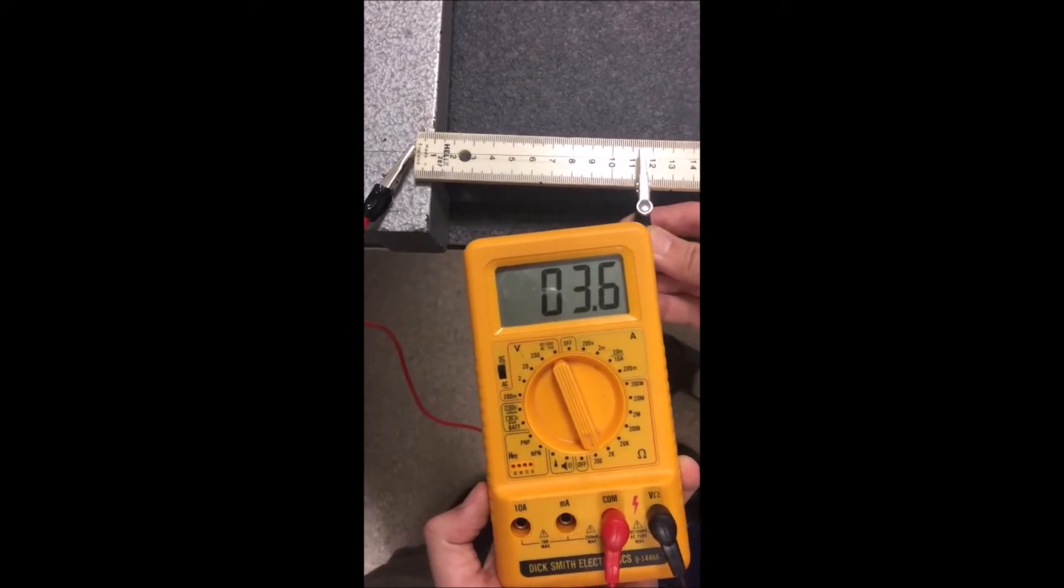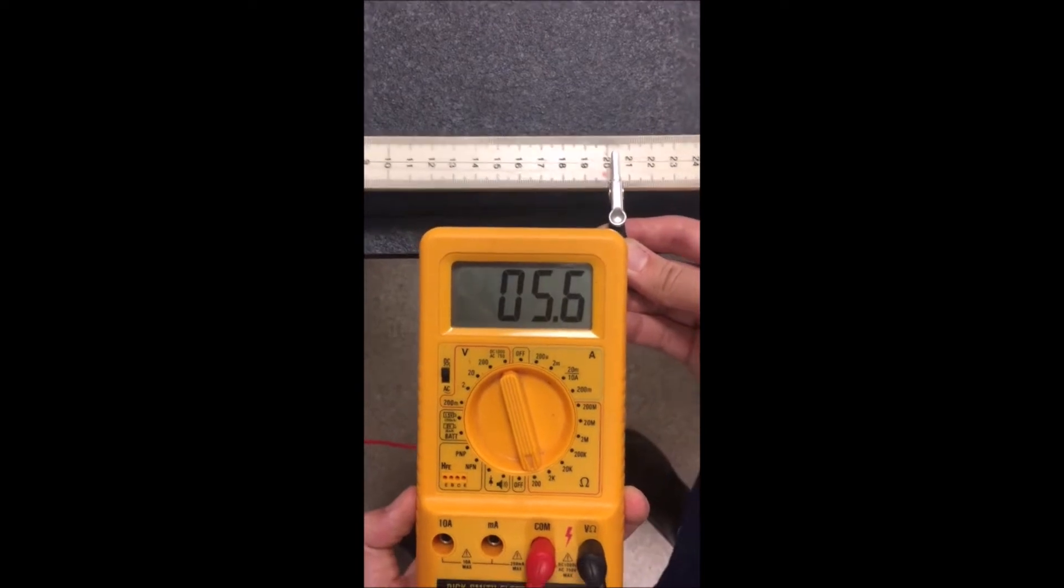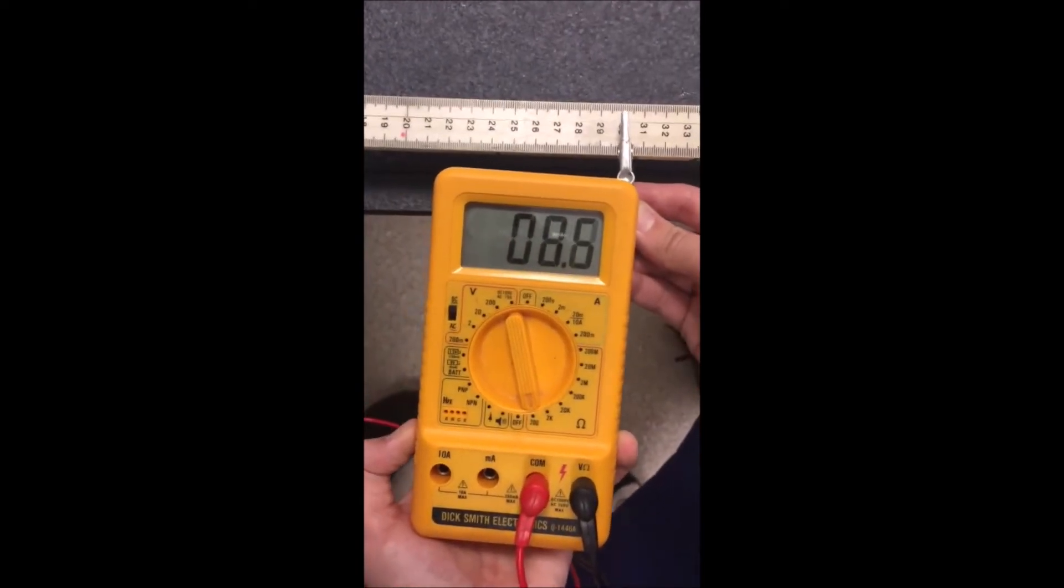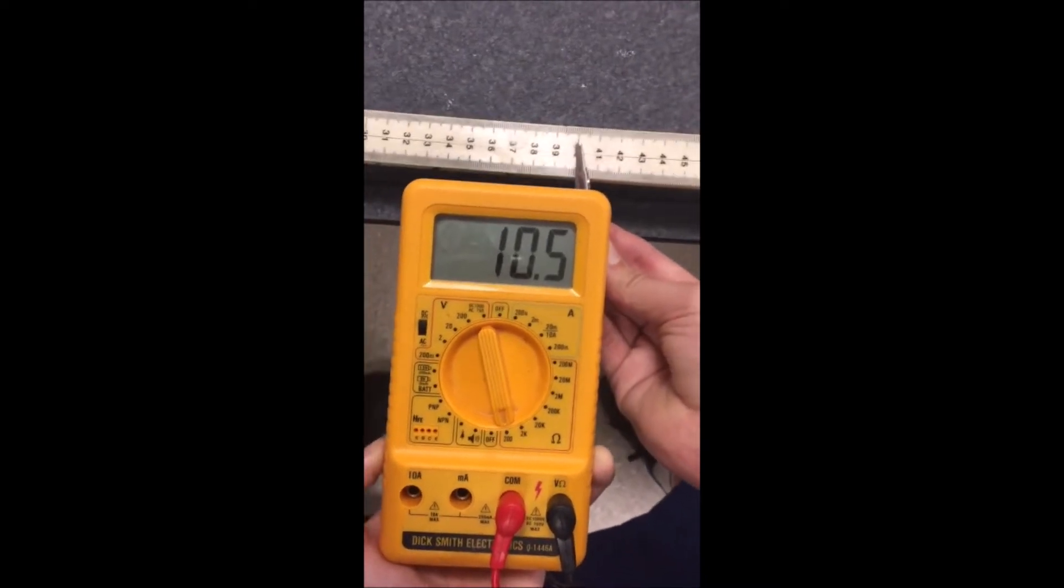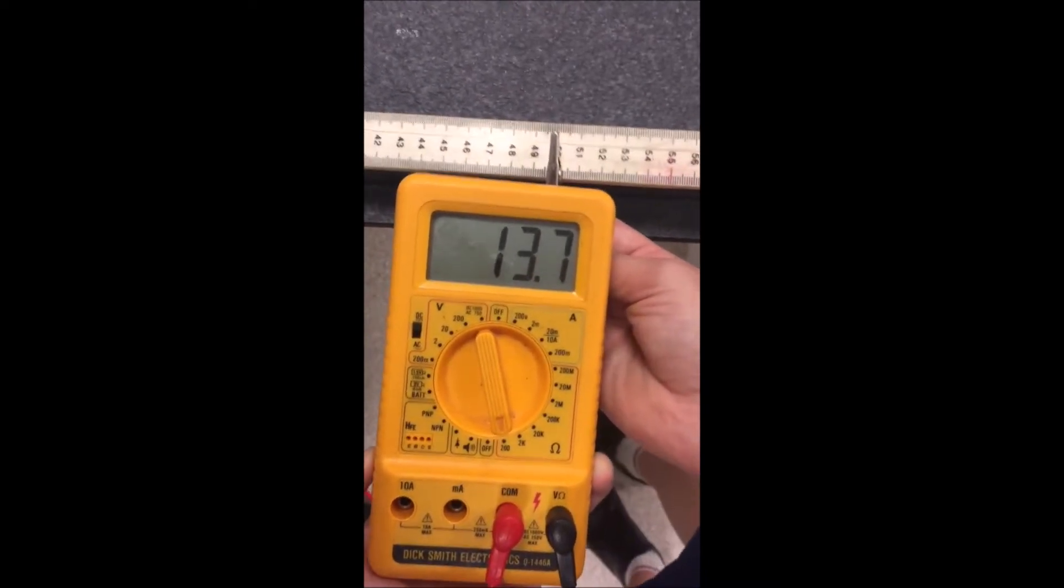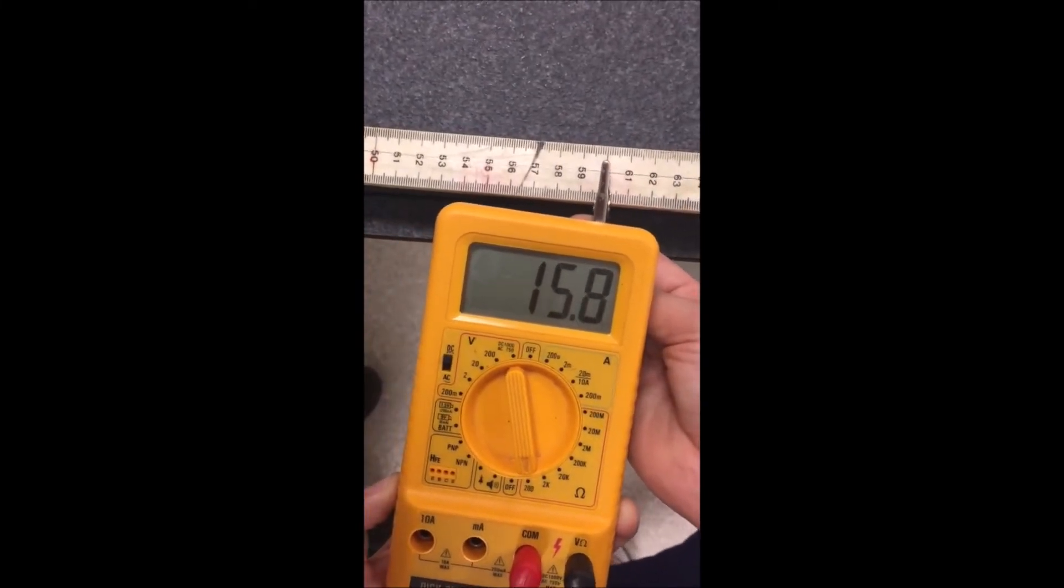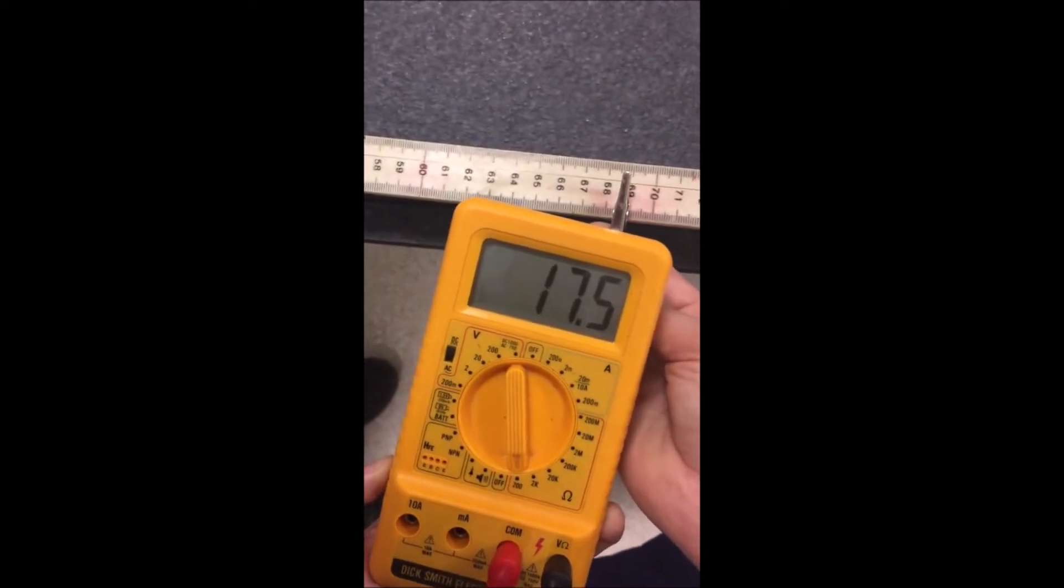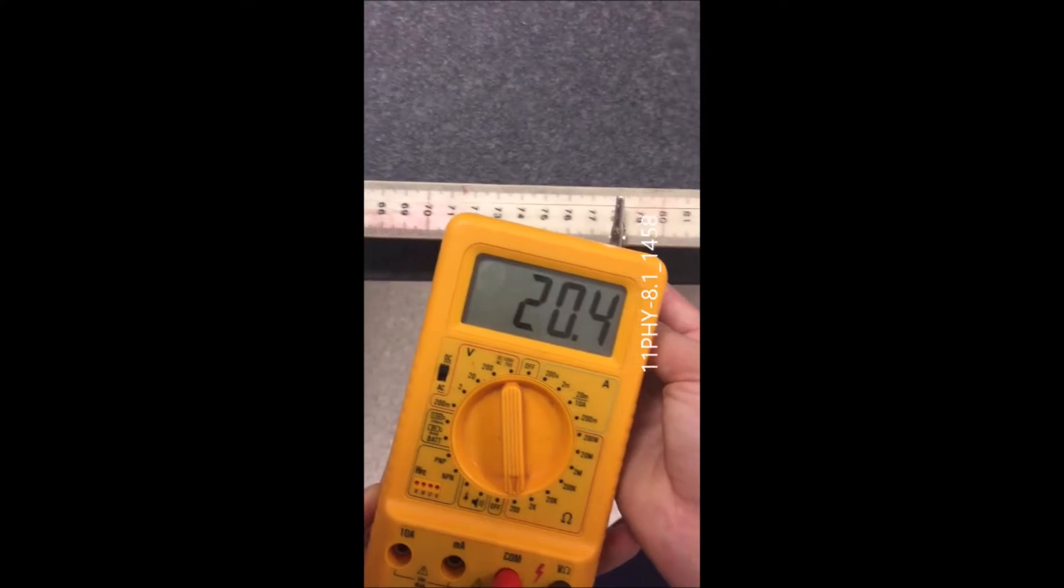We're showing how resistance of a wire changes with length. At 10 centimeters it was 8.7 ohms, at 20 centimeters it's 6, at 30 it's 8.1, at 40 it's 10.8, at 50 it's 13.3, at 60 centimeters 15.8, at 70 centimeters 18.4, and lastly at 80 centimeters.